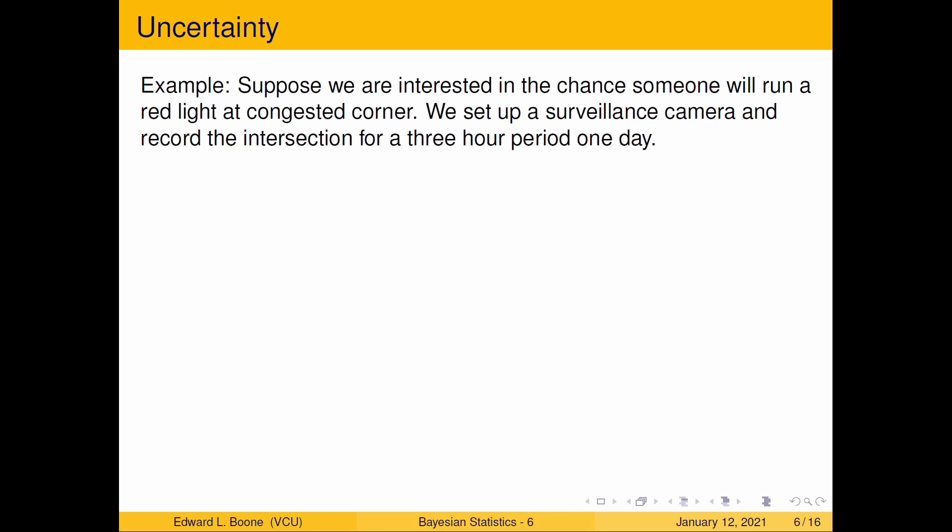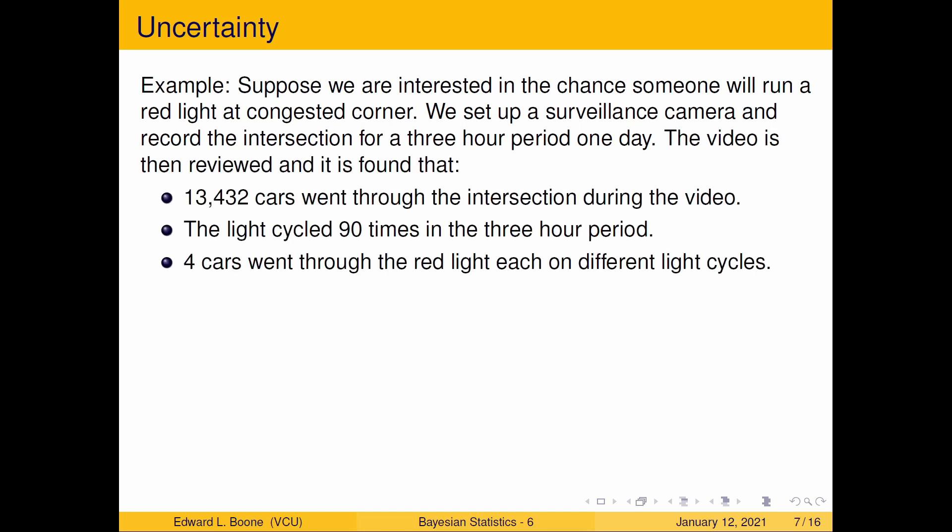Suppose we're interested in the chance someone will run a red light at a congested corner. We set up a surveillance camera and record the intersection for a three hour period during one day. We go back, we look at the video and we see that 13,432 cars went through the intersection during the video. The light cycled 90 times in the three hour period and four cars went through the red light, each on different light cycles, meaning that one car didn't follow another one through the red light. So empirically there is a 4 to 13,432 chance that a car will run the red light.